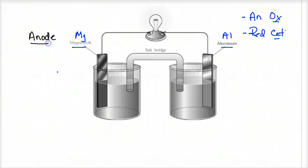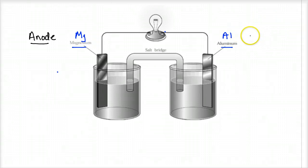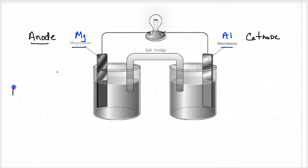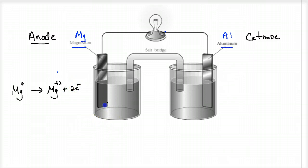So magnesium is our anode — it is the more reactive element, so it oxidizes. That makes aluminum our cathode, the metal that does not react as well as magnesium. At the anode, oxidation occurs: magnesium loses electrons and becomes Mg²⁺ ion, producing 2 electrons. A piece of the solid magnesium becomes Mg²⁺, so the anode electrode is corroding — getting smaller over time.